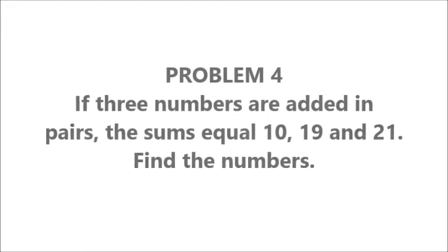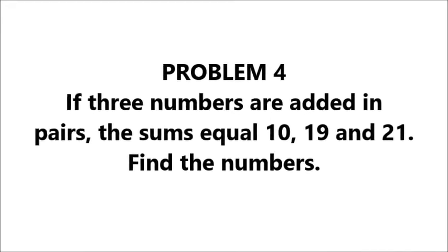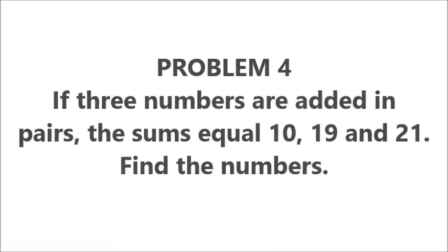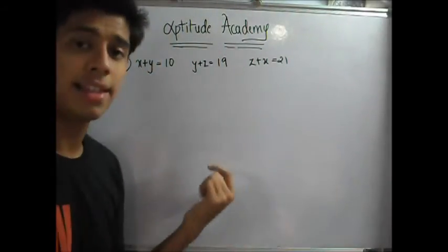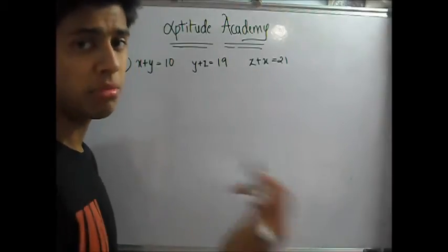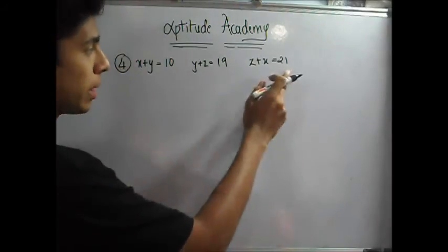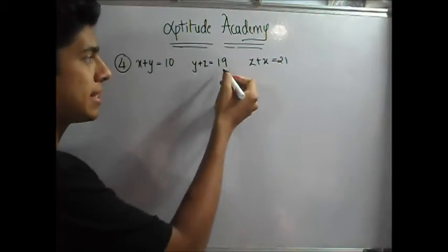Problem 4: If 3 numbers are added in pairs, the sums equal 10, 19, and 21. Find the numbers. Now for the 4th problem, they've given you 3 numbers. Let's say x, y, z. And they said that if you add them in pairs, they give you 10, 19, and 21. So x plus y is 10, y plus z is 19, and z plus x is 21. They've asked you to find x, y, and z.